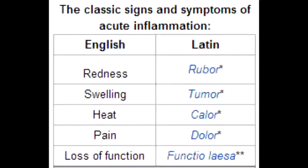Inflammation is characterized by rubor, which is redness; dolor, which is pain; calor, which is heat; tumor, which is swelling; and functio laesa, which is loss of function. So these are all the things that occur in inflammation.